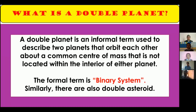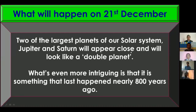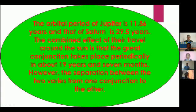On 21st December 2020, the two largest planets of our solar system, Jupiter and Saturn, will appear close and will look like a double planet. What is even more intriguing is that this is something that happened nearly 800 years ago. The orbital period of Jupiter is 11.86 years and Saturn's orbital period is 29.5 years. The combined effect of their travel around the Sun is that the great conjunction takes place periodically. The separation between the two varies from one conjunction to the other.